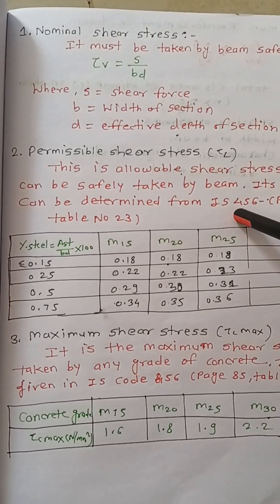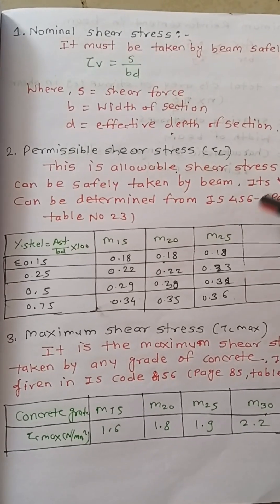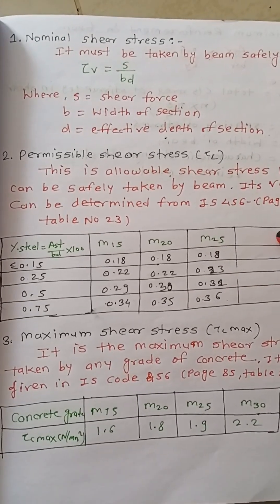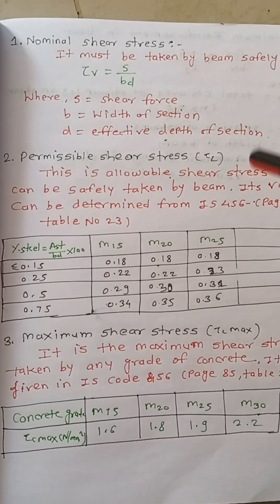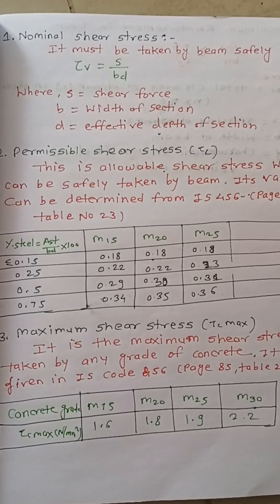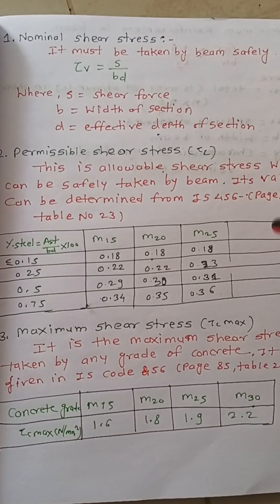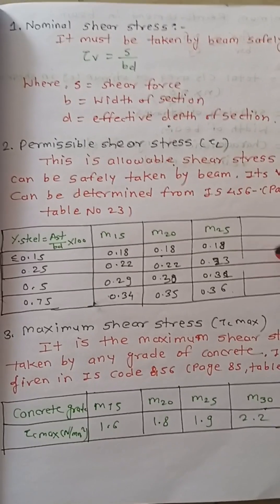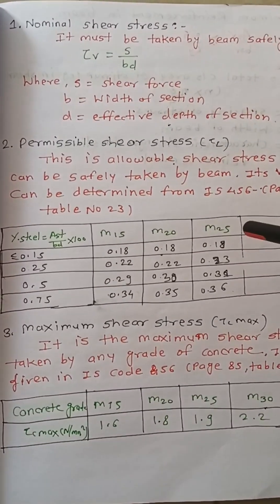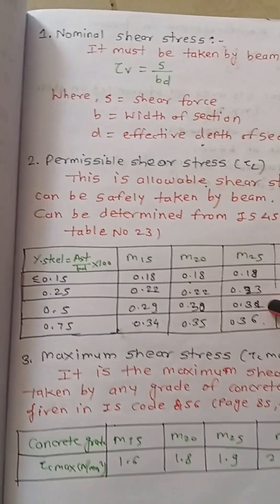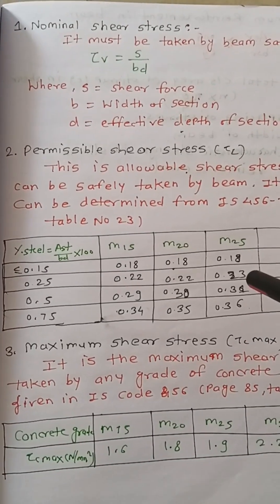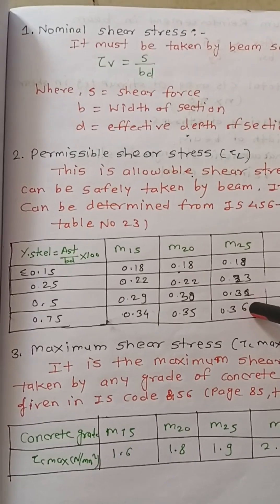IS 456 has given certain limitations or restrictions — values above which we cannot go, or beyond which it is not permissible to go, otherwise your building will not be safe. This applies to beams, columns, and other components in the building. We have to compare the actual values coming for your beam with the values given by the IS code.